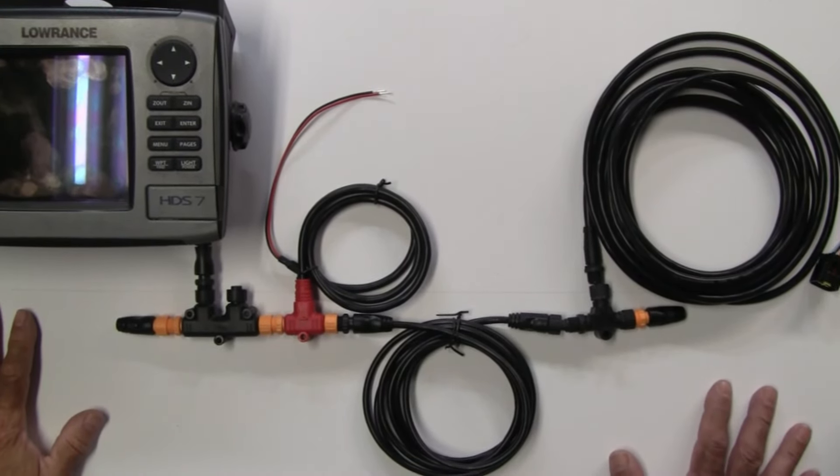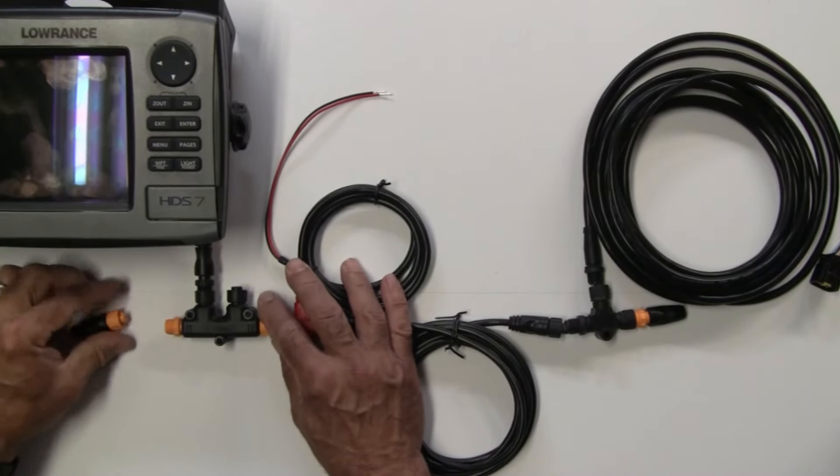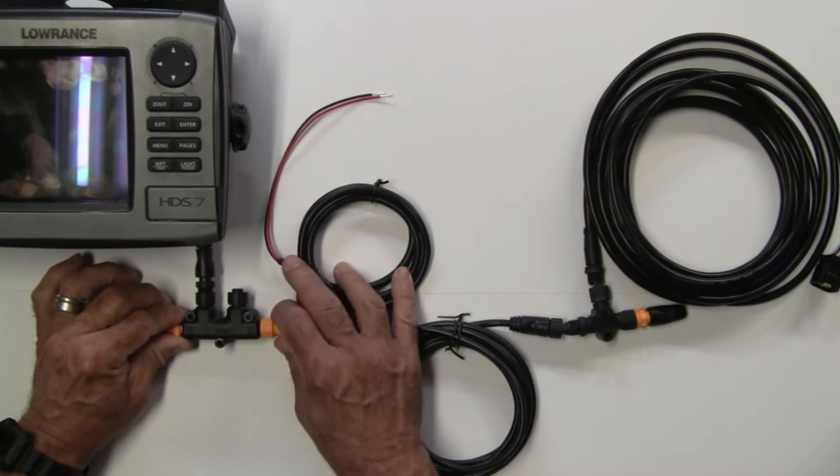So here's my little tabletop NMEA 2k network. Let me go ahead and take this apart and go over the different components that make up this network.